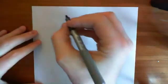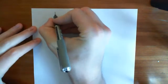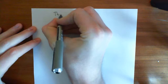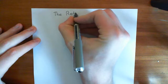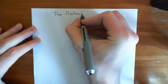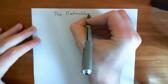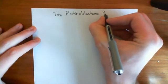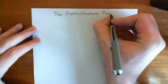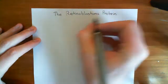Welcome to this video in the Cancer Playlist. In this video, we're going to discuss the retinoblastoma protein, which is really important in controlling a checkpoint in the cell cycle. It's called the retinoblastoma protein because it's a protein that was found to be mutated in a certain type of cancer known as retinoblastoma.